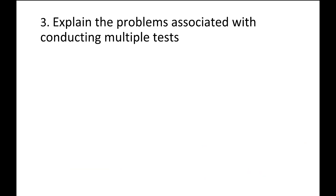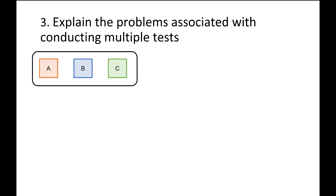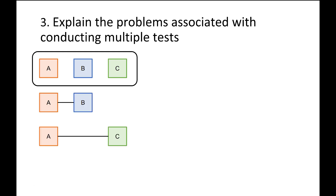Our third learning objective is to explain the problems associated with conducting multiple tests. The procedures we've learned so far have been for a single group or the difference in two groups. What if we wanted to compare three or more groups? We could compare A to B, then A to C, and finally B to C. But there are problems with this. First, it's not really addressing the research question of how all three groups are different — we'd only be able to make claims about pairwise differences.